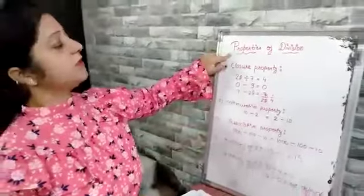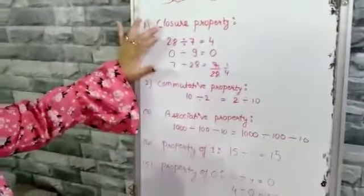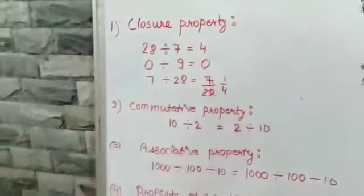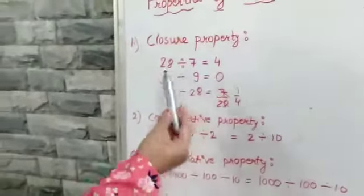Today we will discuss the properties of division. As usual, the first property is closure property. Closure property states when we divide two whole numbers, the answer should also be a whole number. So we have taken different types of examples. 28 is a whole number divided by 7, that is also a whole number.